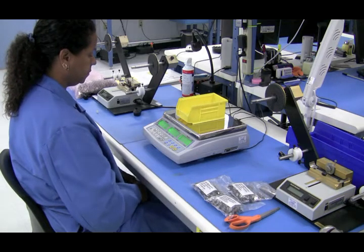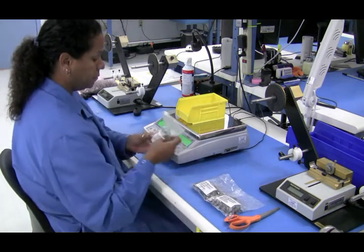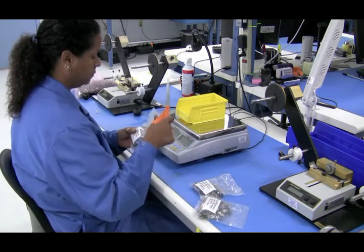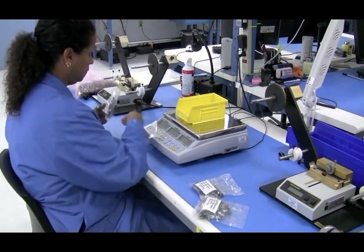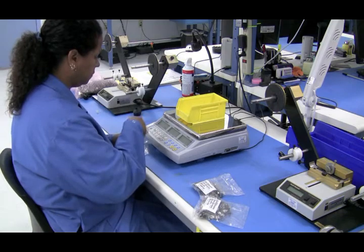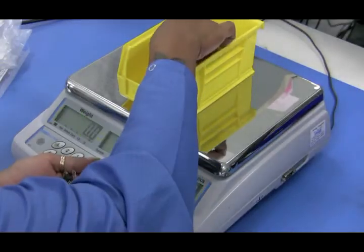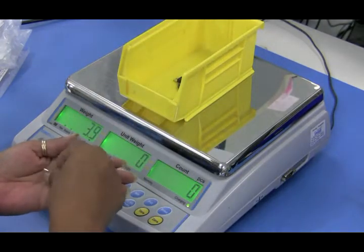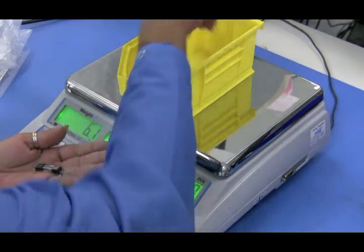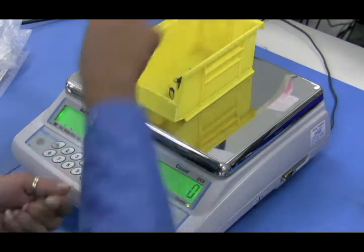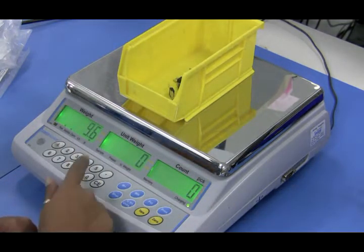We then get a subset or sample of the parts or units that we're going to count. In this case we're going to put five units of a three lead transistor outline package and then we're going to hit sample to get our sample set.